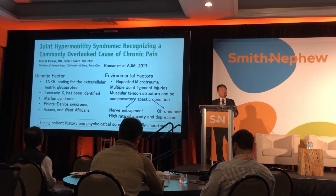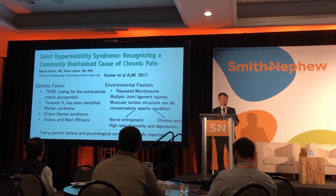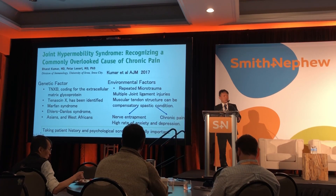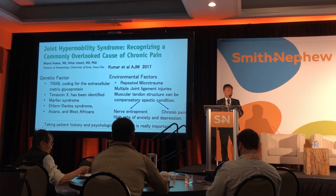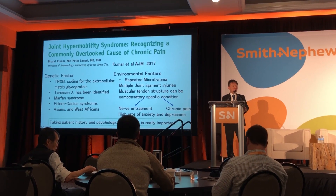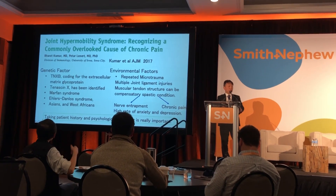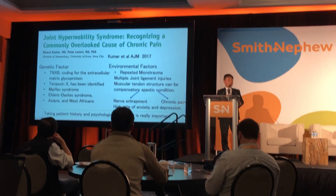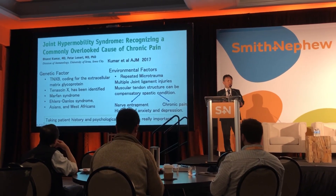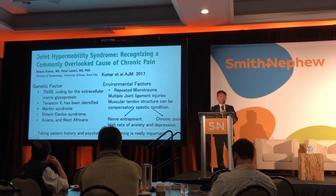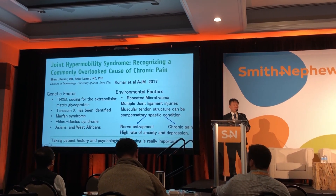Joint hypermobility syndrome is recognized as a commonly overlooked cause of chronic pain. There are two main factors. Genetic factors include mutations affecting extracellular matrix glycoproteins, Marfan syndrome, and Ehlers-Danlos syndrome. Additionally, Asian and West African populations have a higher prevalence of joint hypermobility than Europeans.